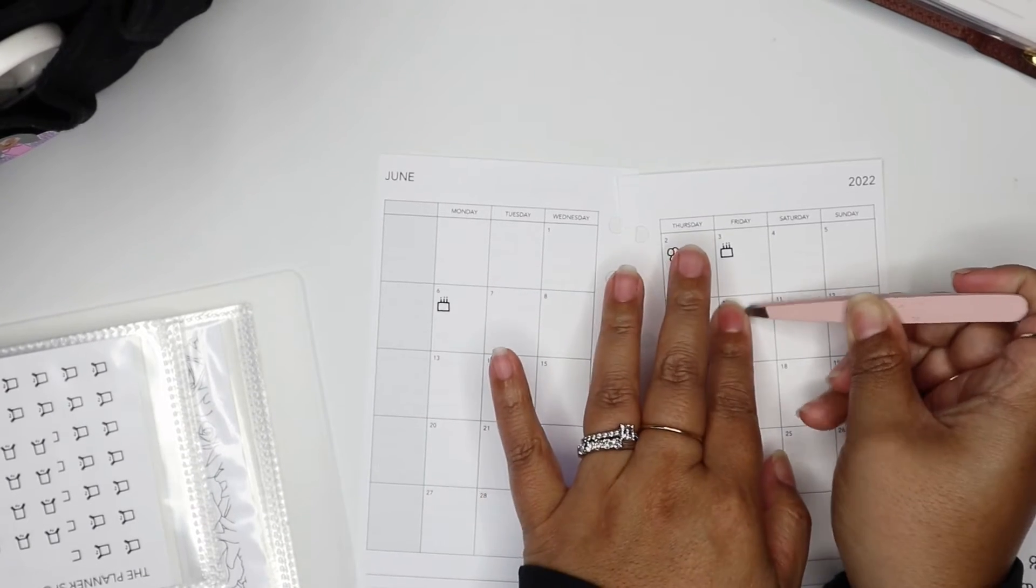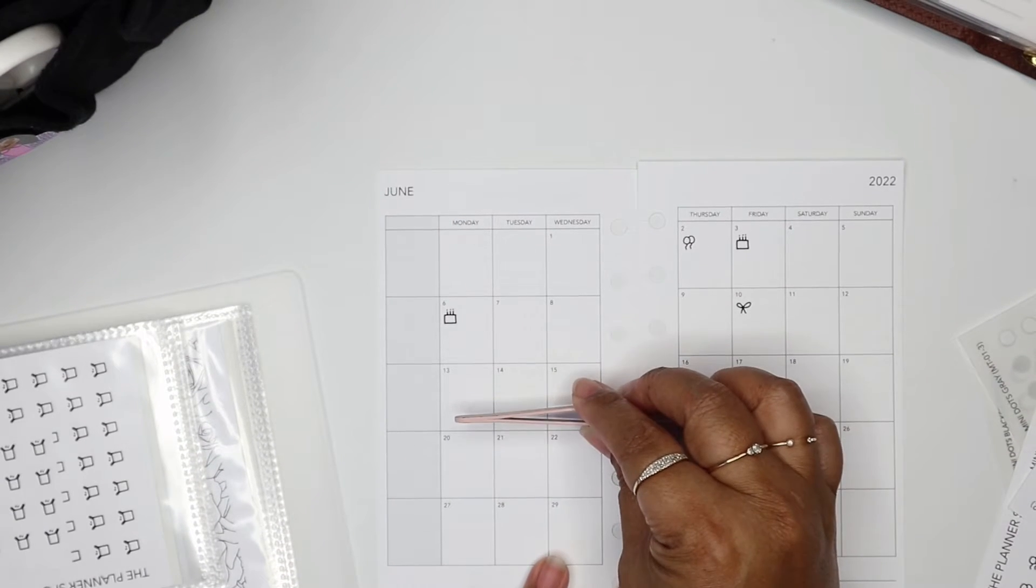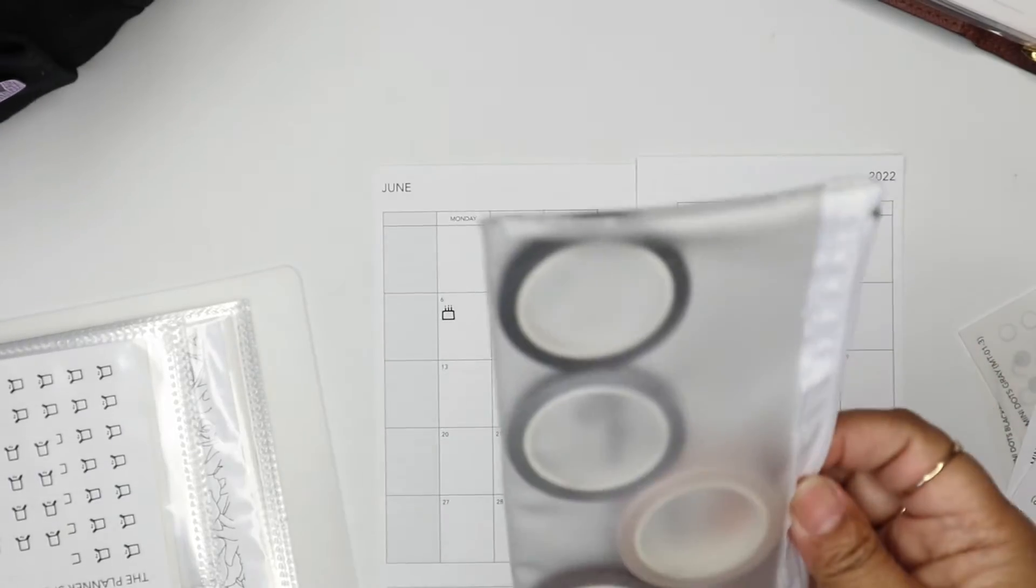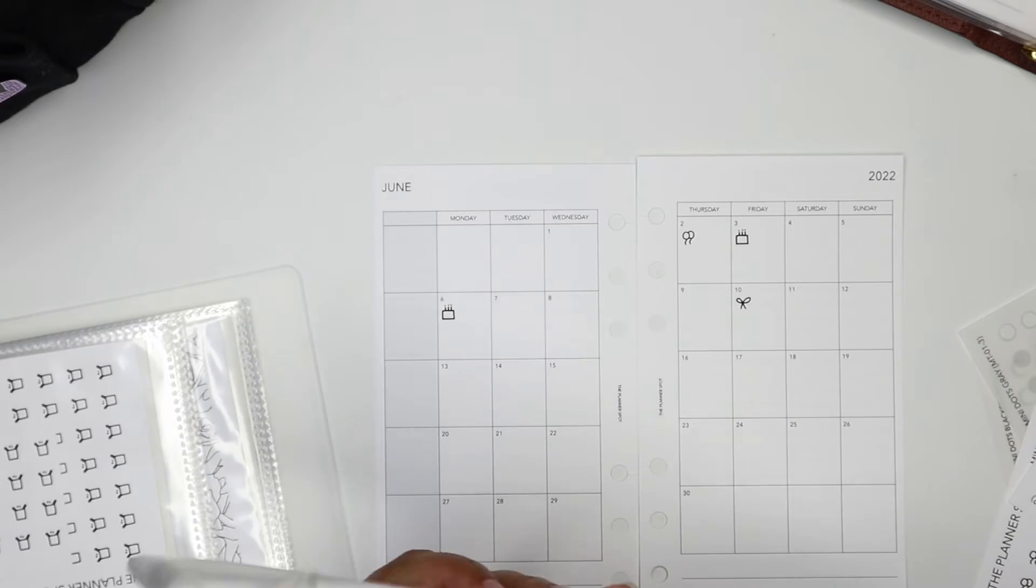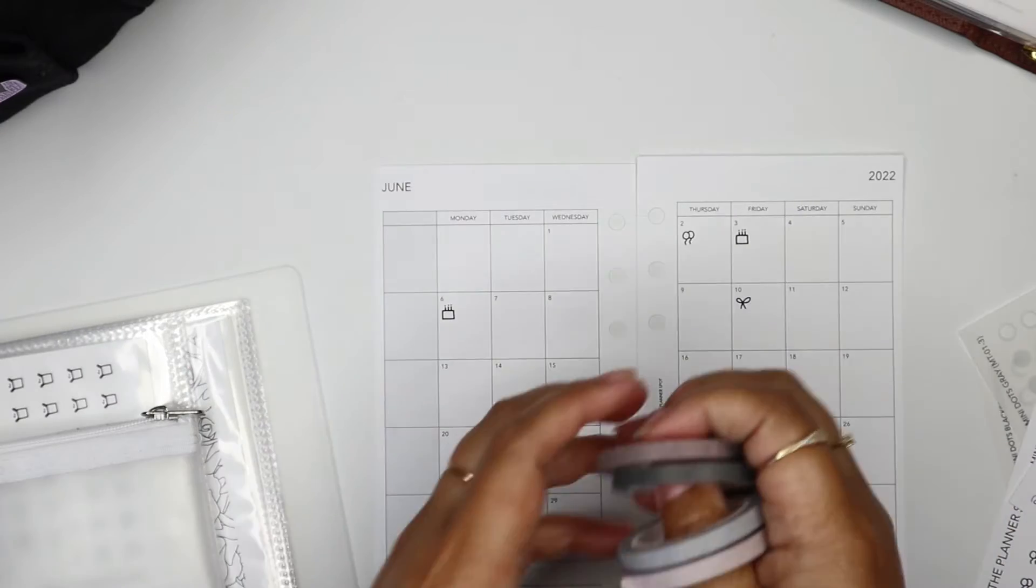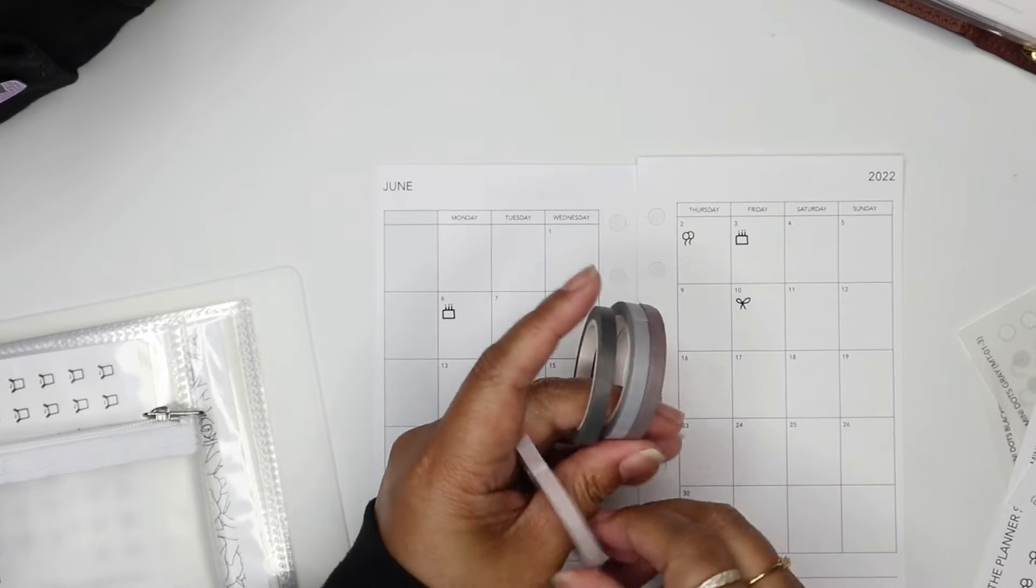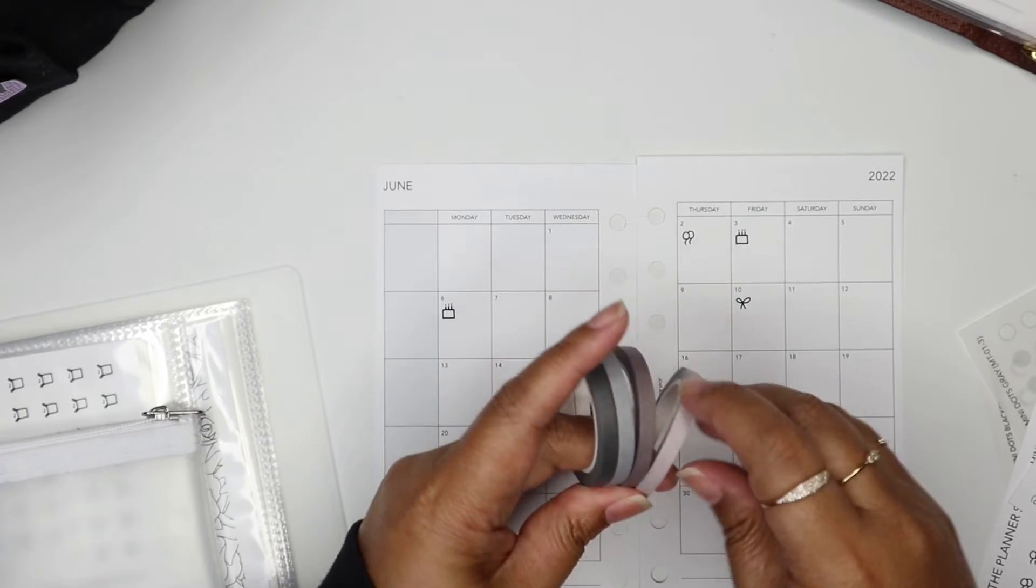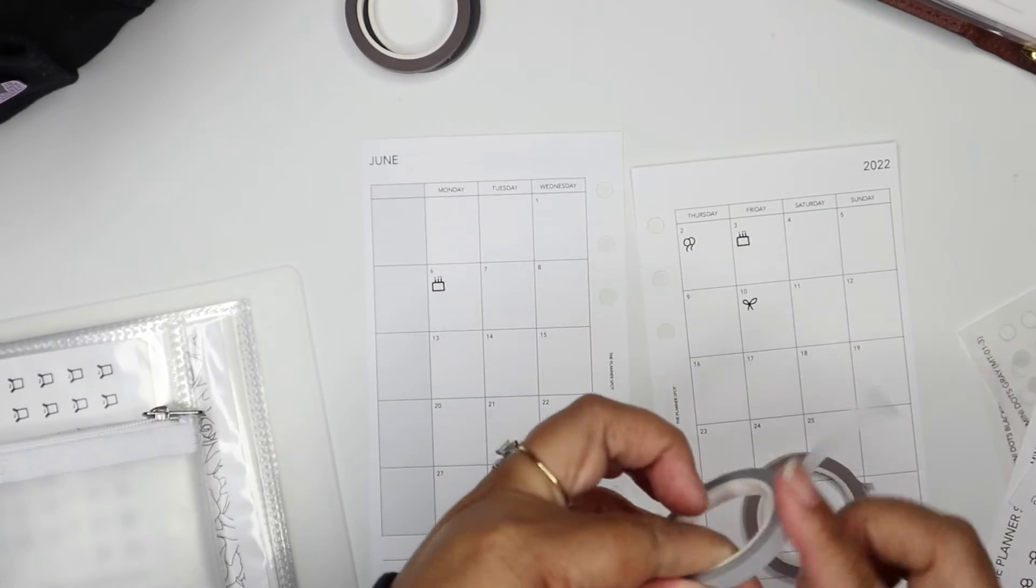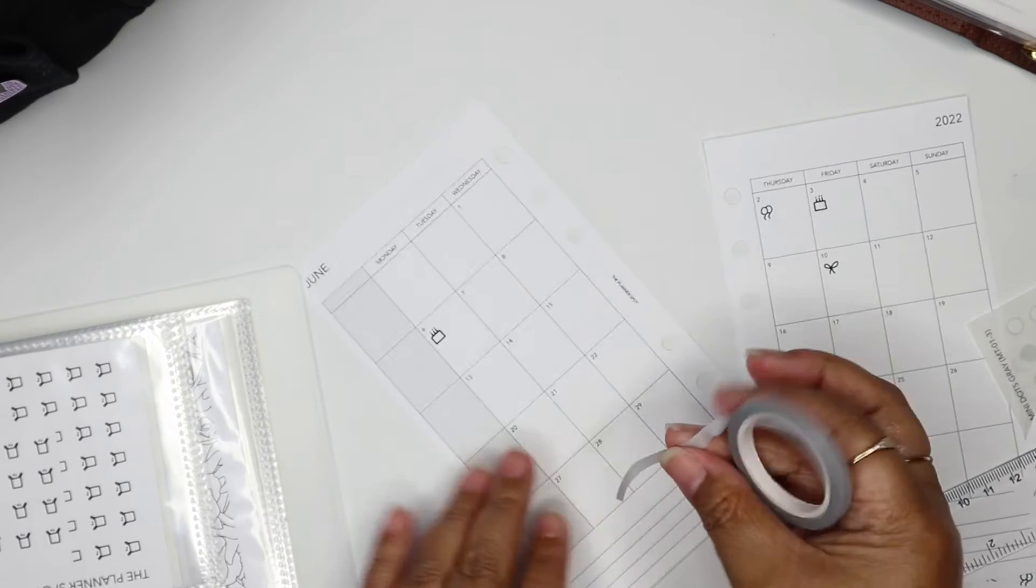And then both of my daughters are attending a camp at our church this week. So I think I'm going to use my washi tape for the first time on a monthly spread. So we have this new skinny washi, it comes in four colors: charcoal, gray, taupe-ish color, and ecru color. I was debating if I want to use ecru or gray. I think I might try gray this time.